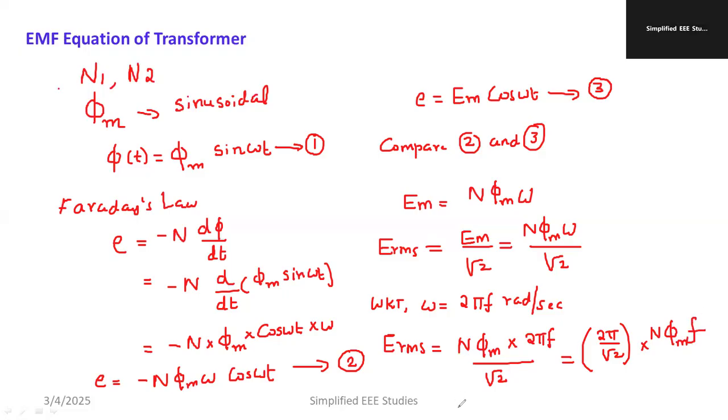If you simplify, you will be getting 4.44*f*N*phi_m. This is actually called EMF equation. The EMF equation of transformer.